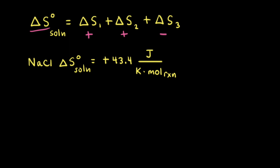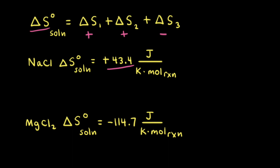An example of a substance that has a positive value for delta S-naught of solution is sodium chloride. At 25 degrees Celsius, delta S-naught of solution is equal to negative 114.7 joules per Kelvin per mole of reaction. An example of a substance that has a negative value for delta S-naught of solution is magnesium chloride. At 25 degrees Celsius, delta S-naught of solution is equal to negative 114.7 joules per Kelvin per mole of reaction. The main reason for the difference in entropies for these two substances has to do with the third step, the magnitude of delta S-3.